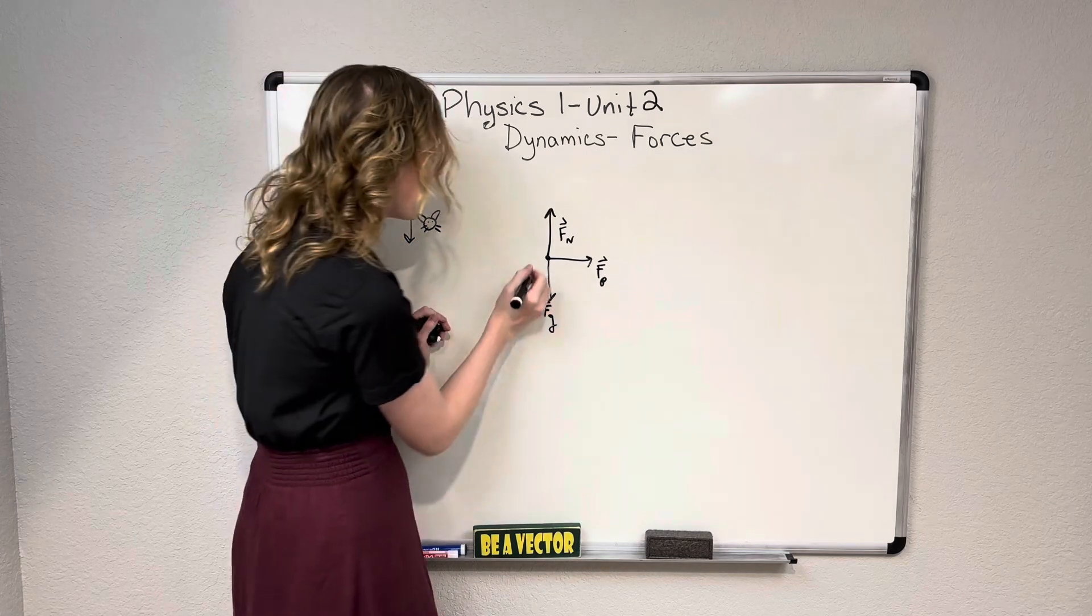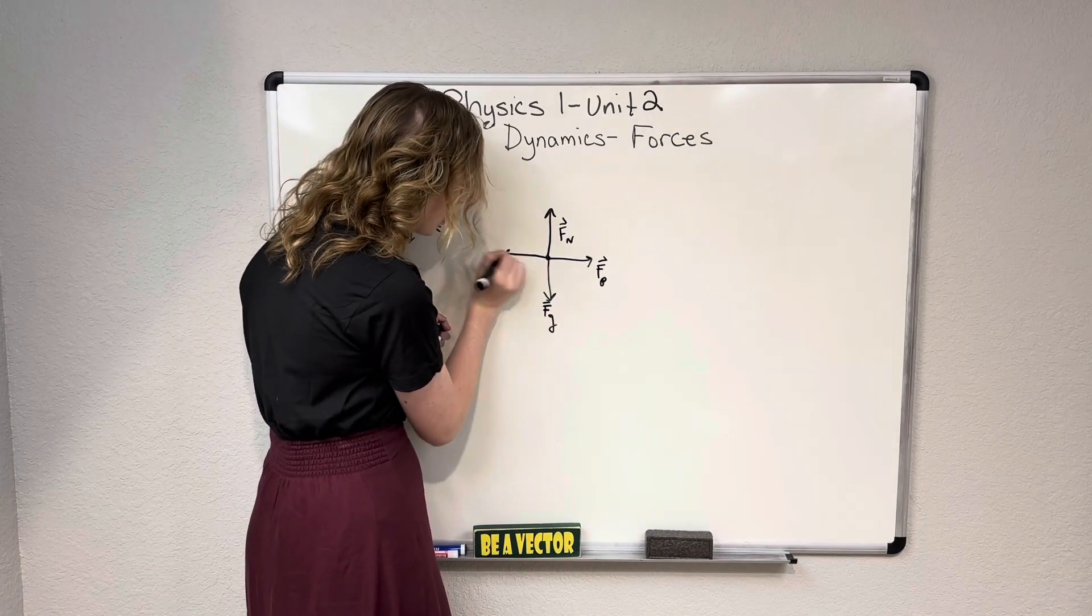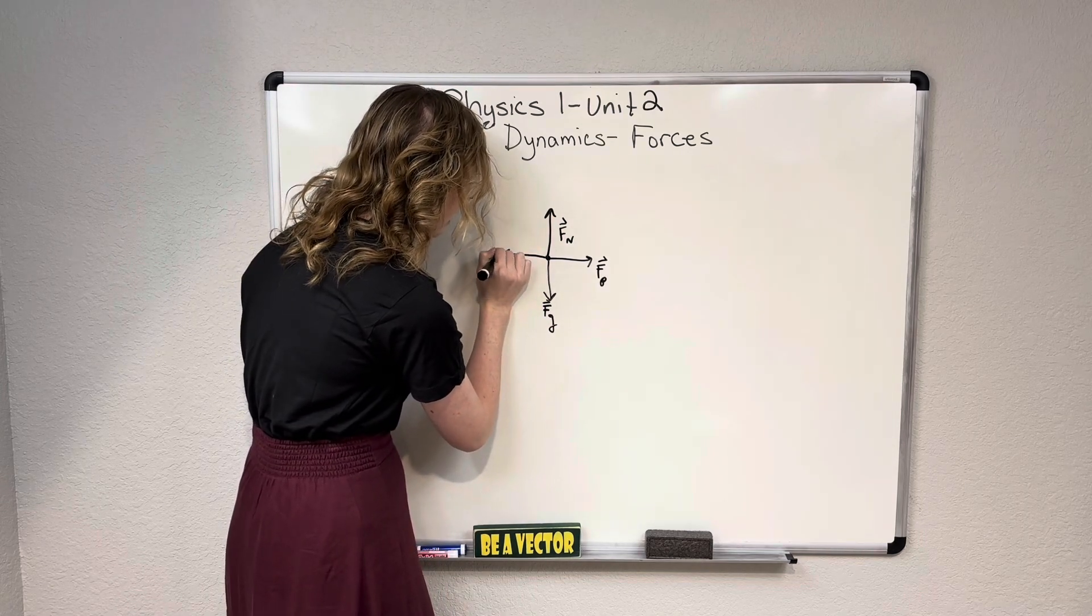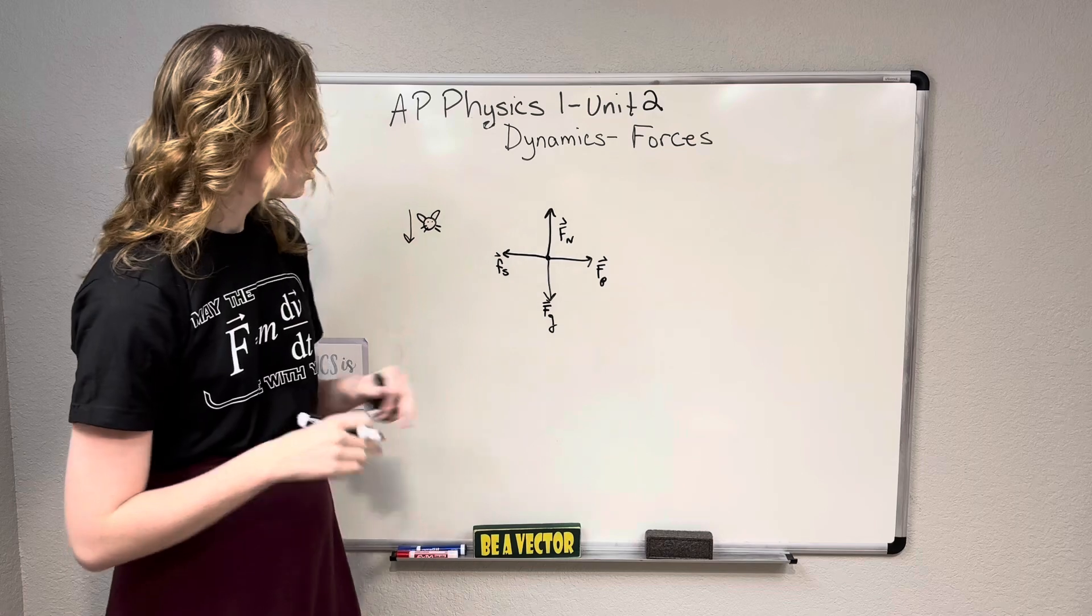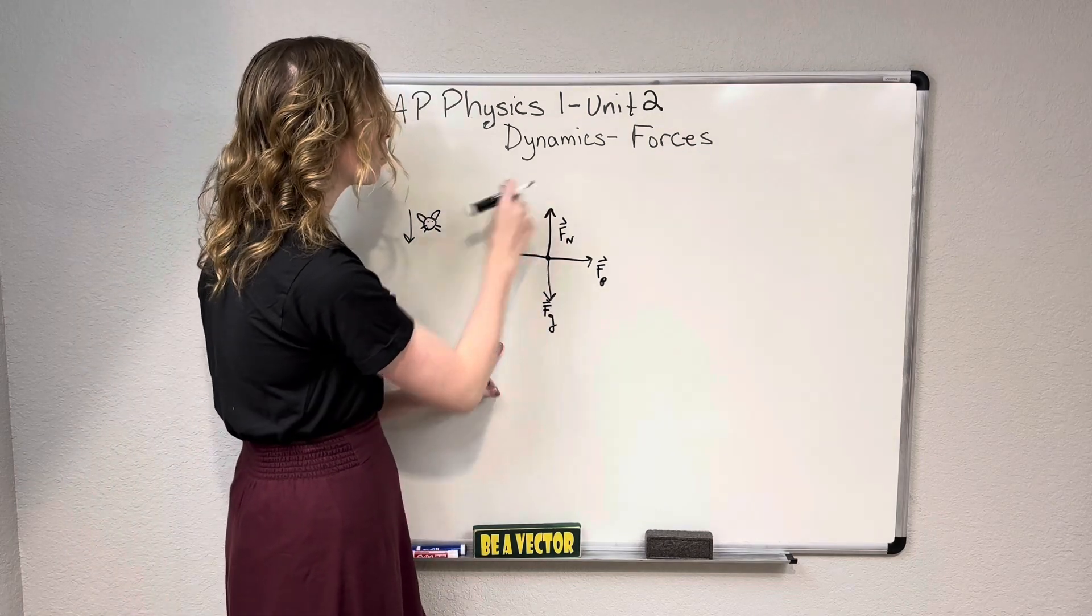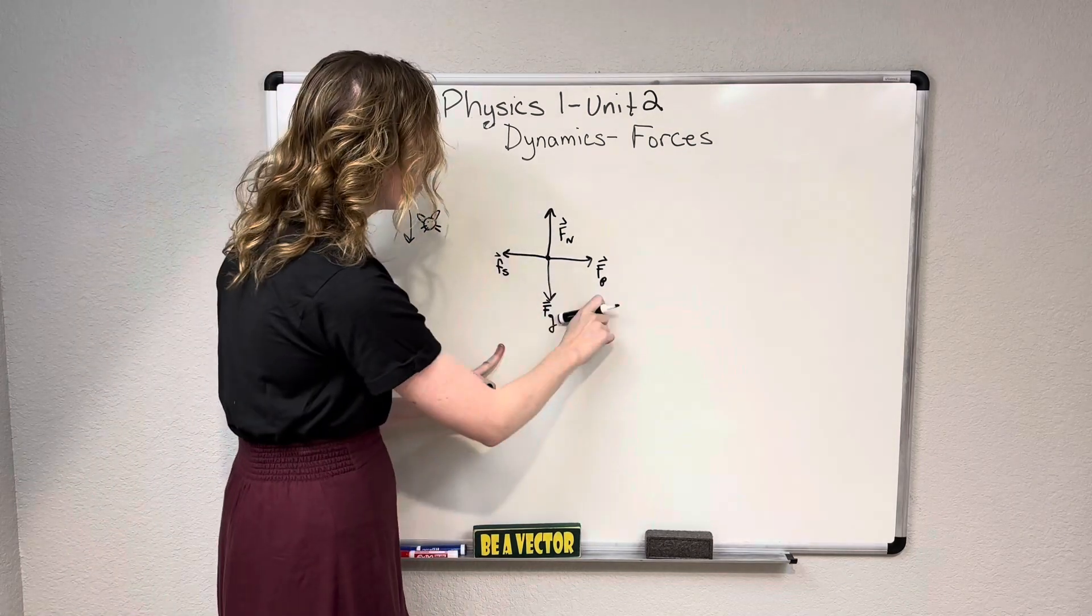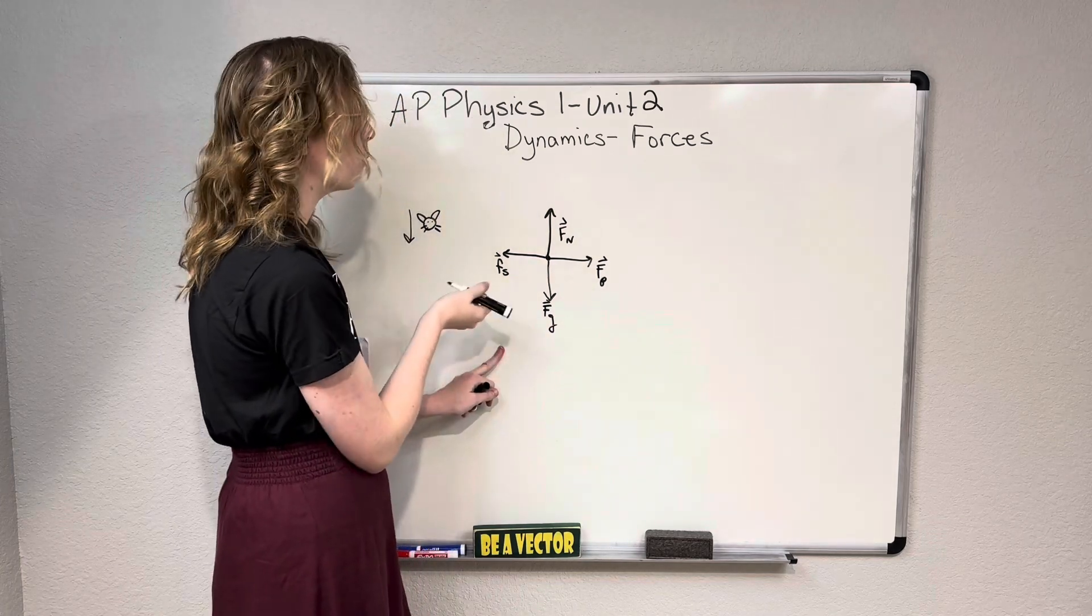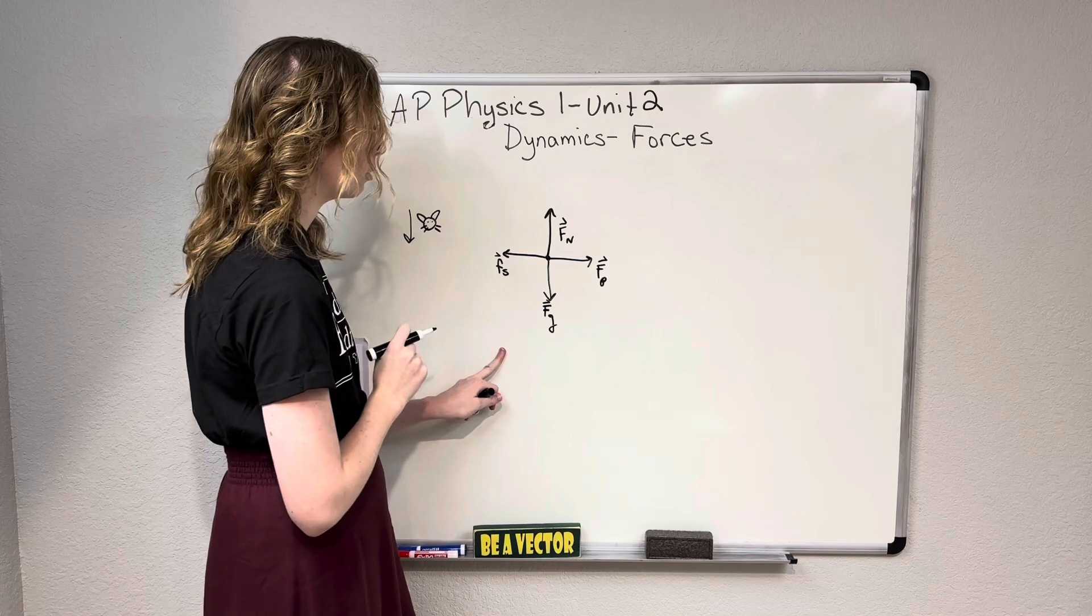What force is that? Well, that's going to be friction, and specifically, it's going to be static friction, because Isaac isn't moving. So here we have the force of gravity pulling down, the normal force pushing up, cancelling that out. We have the force of our push going east, and we have static friction going west, cancelling out the force of our push.